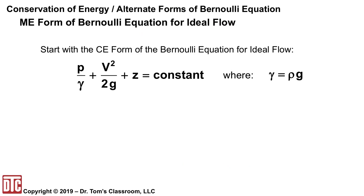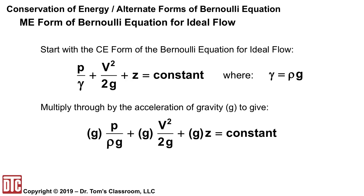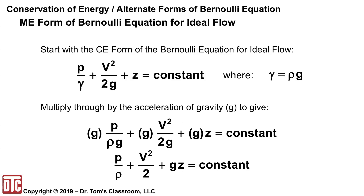First we're going to look at what I refer to as the ME form. We've been working with the CE, or civil engineering, form. We start with the CE form: p over gamma plus v squared over 2g plus z equals a constant, where gamma equals rho times g. We multiply through by g, and after cancellation we get p over rho plus v squared over 2 plus gz equals a constant.